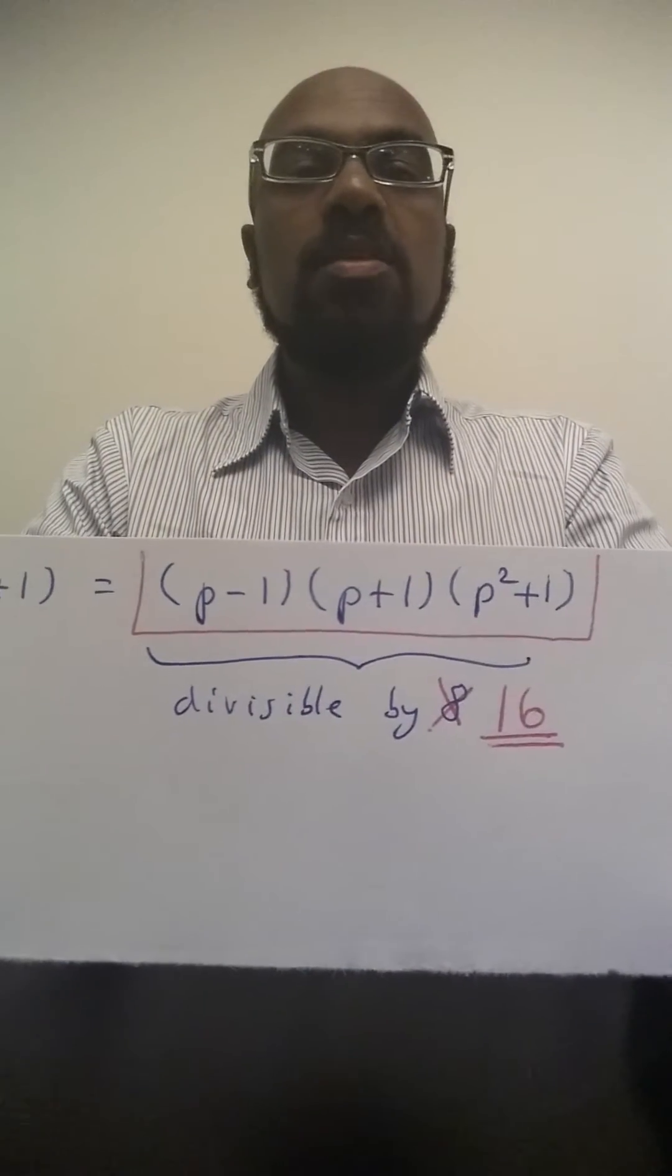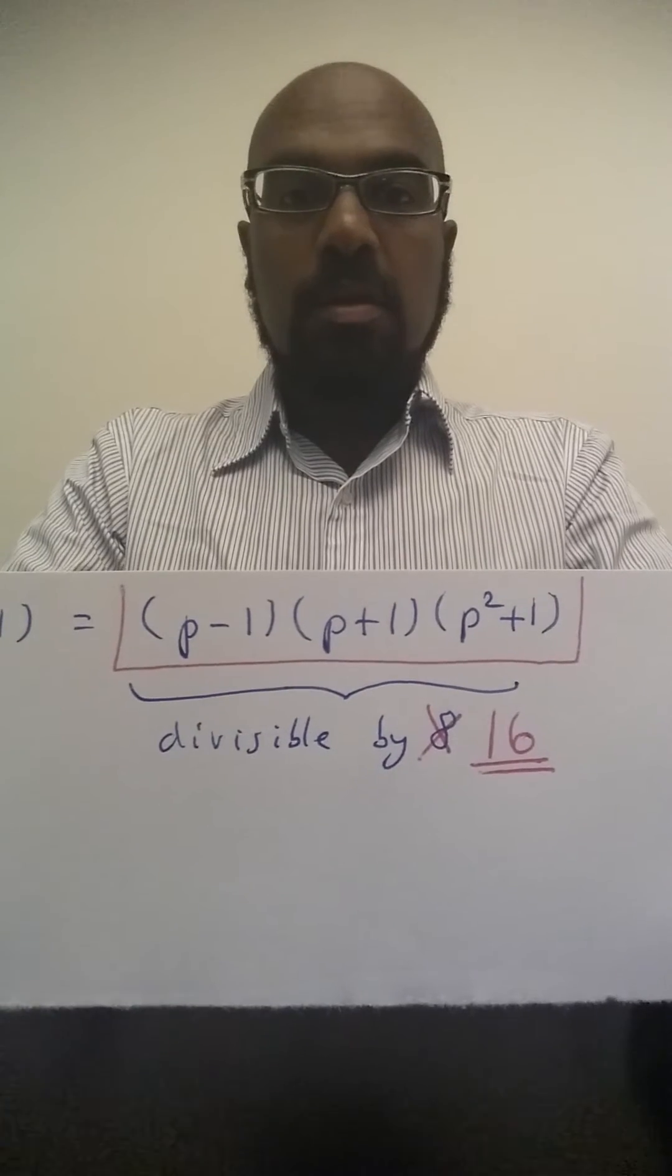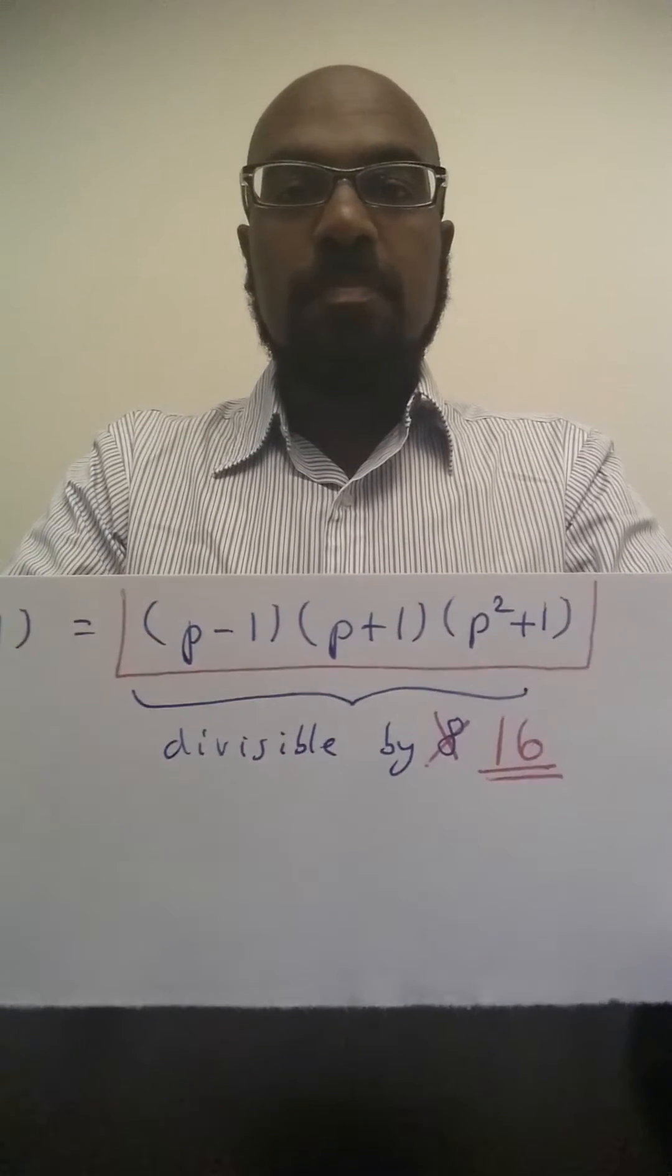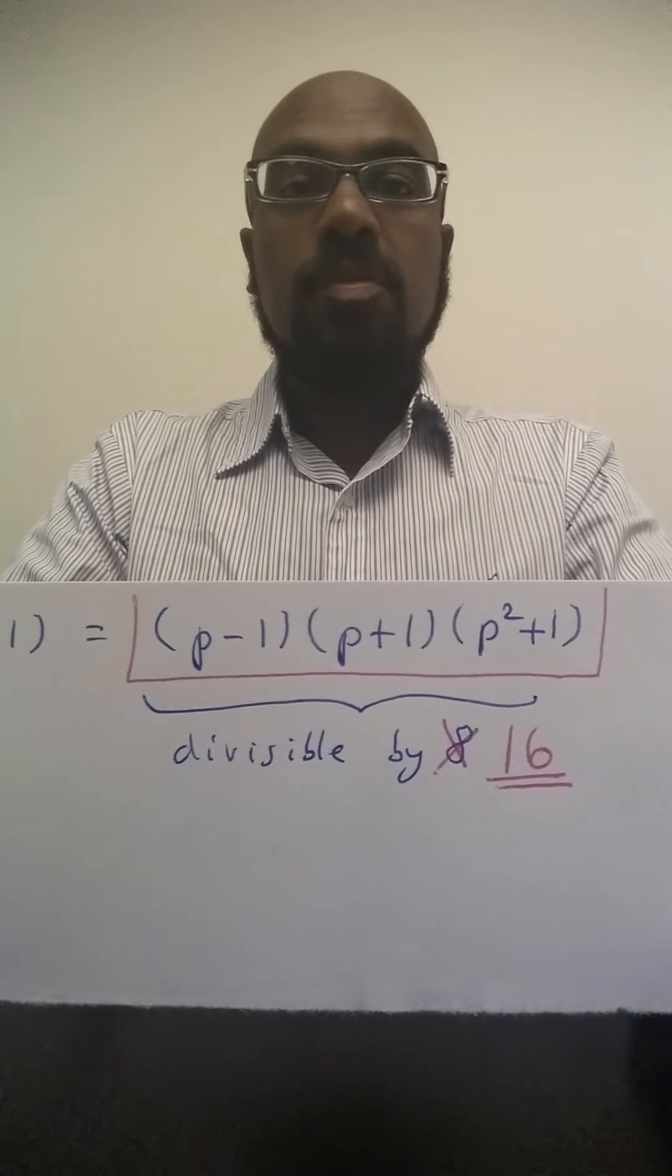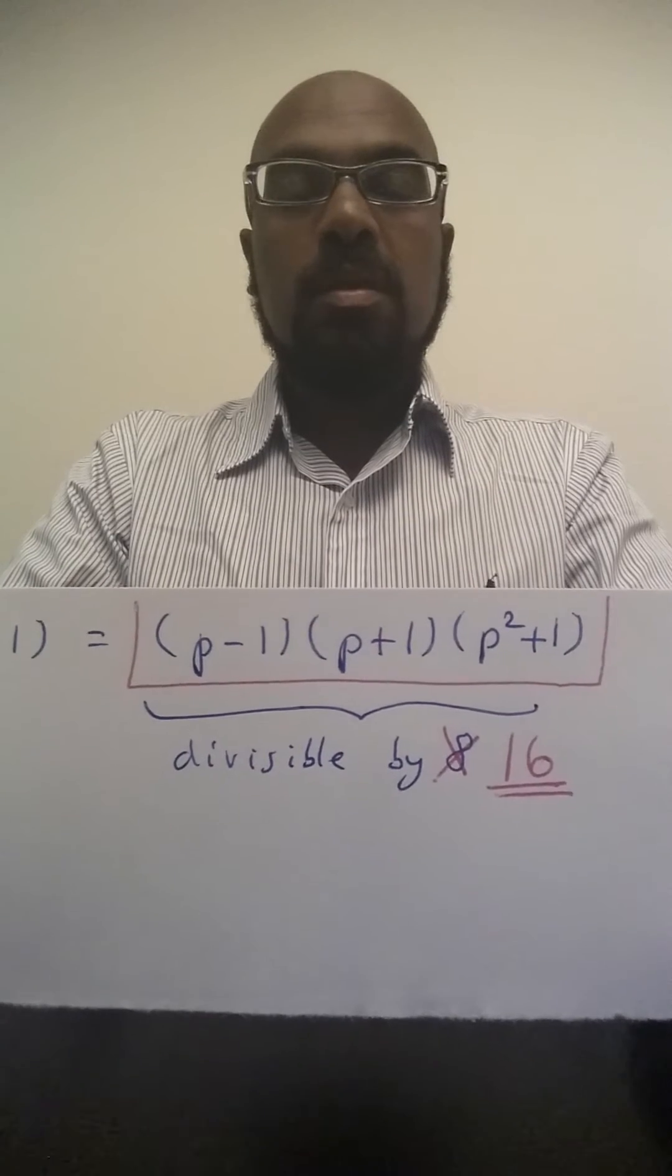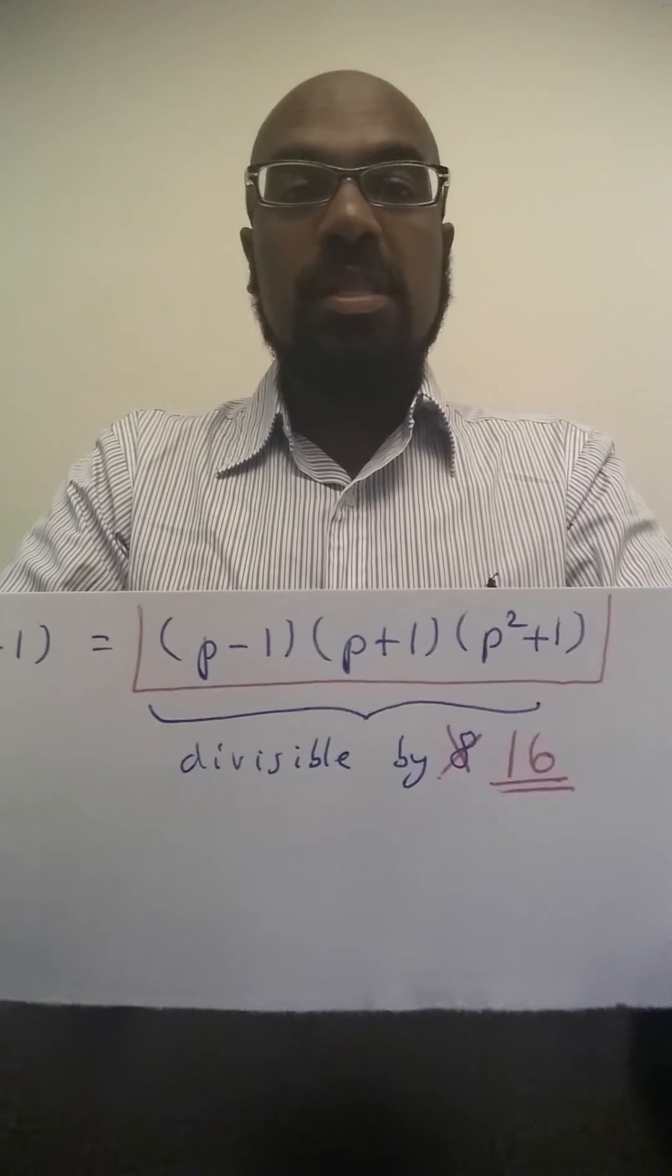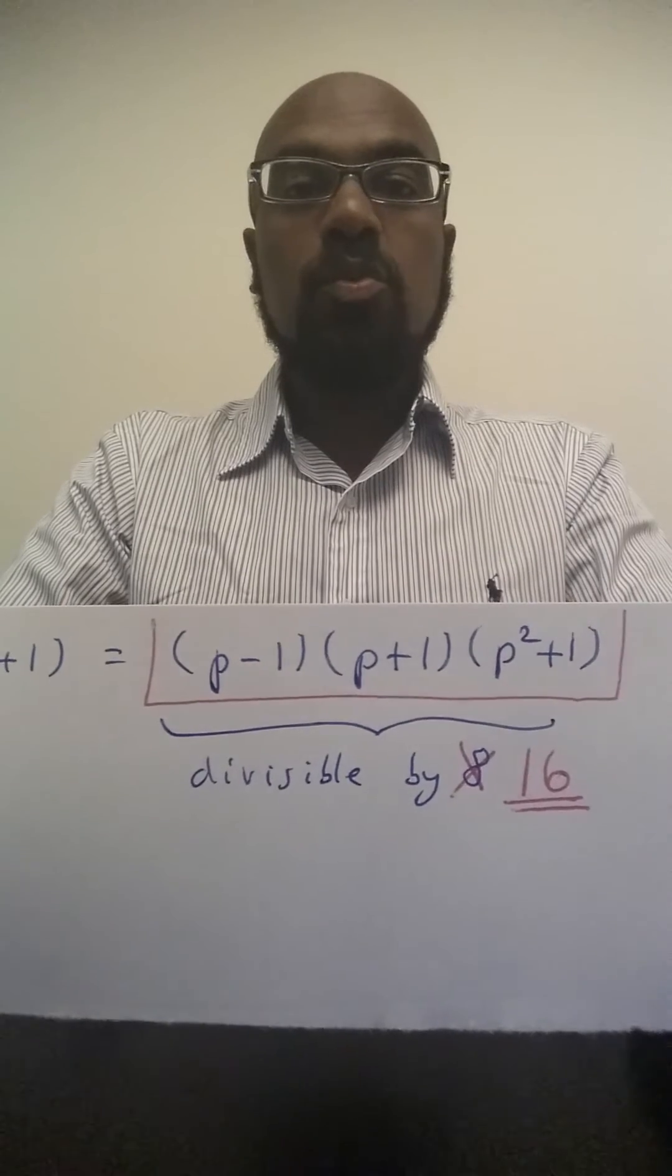Okay let's take a look at divisibility by 3 now. Again notice p is a prime. Since p is a prime, 3 does not divide p. So p either leaves a remainder of 1 or 2 when divided by 3.